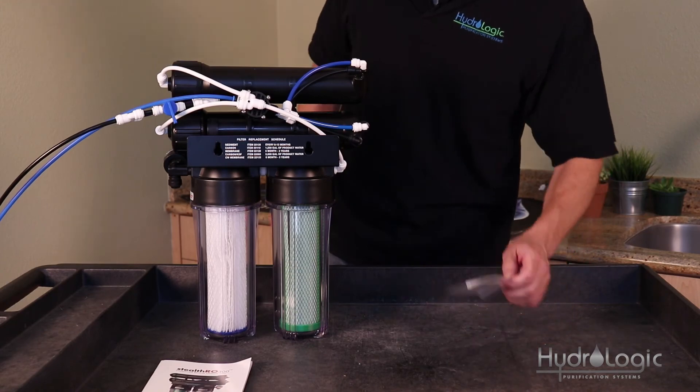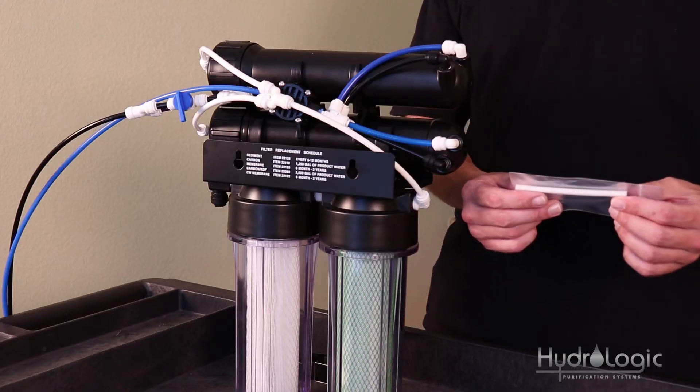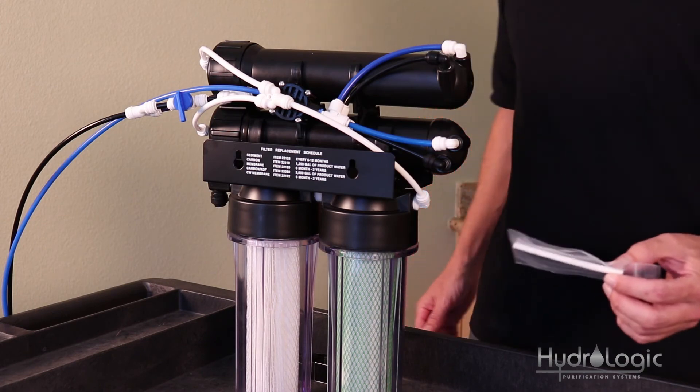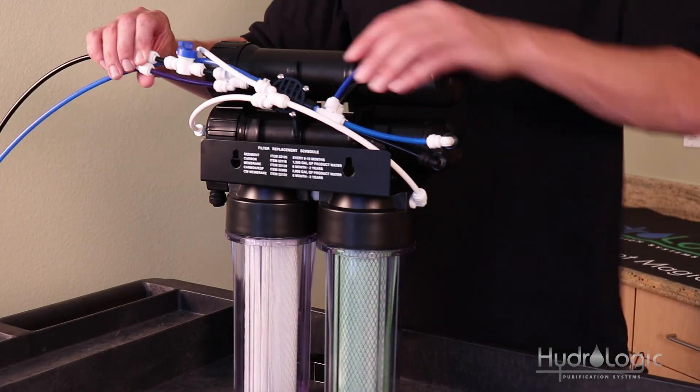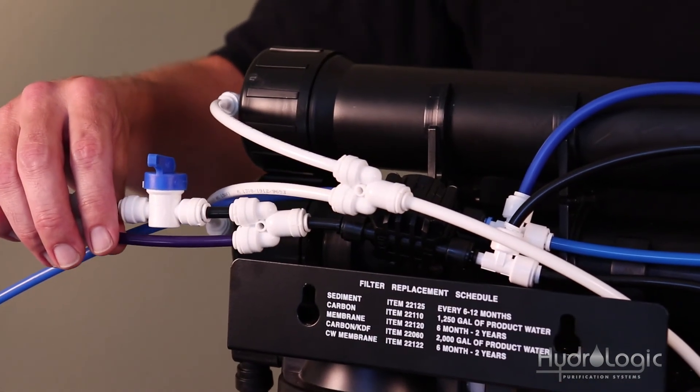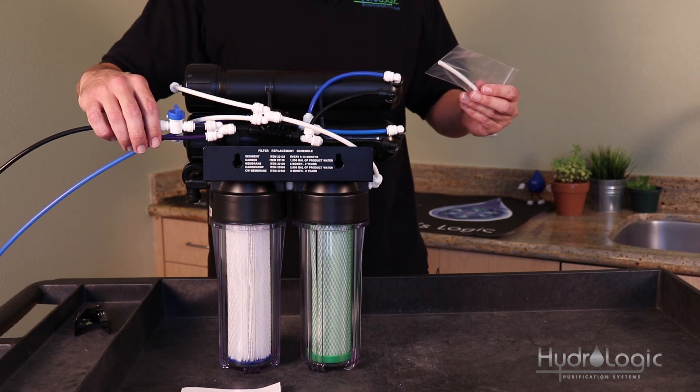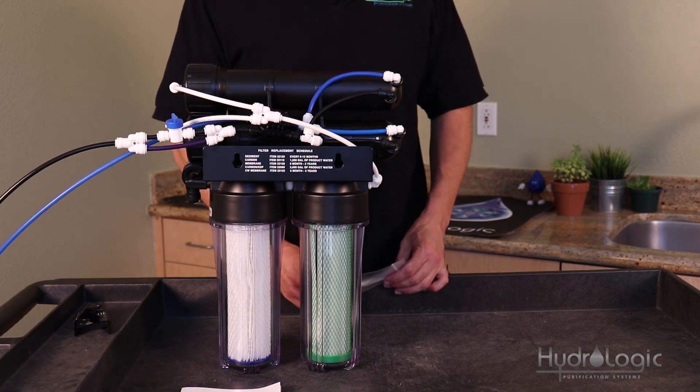Also, you'll notice this kit came with a white flow restrictor. This is going to be your one-to-one flow restrictor for your Stealth 300. Now, make sure you hold on to the purple flow restrictor that came with your Stealth 150. That is now going to be the two-to-one flow restrictor for your new Stealth 300. Choose which flow restrictor works best for you, install it, and you're ready to use your new Stealth 300.